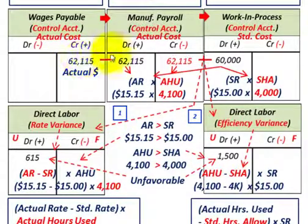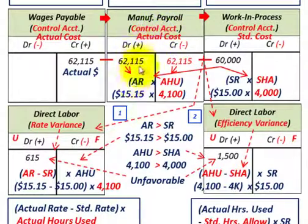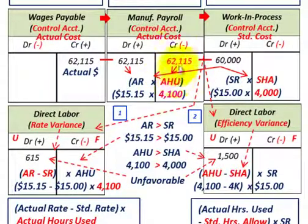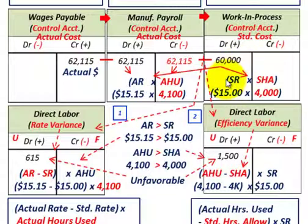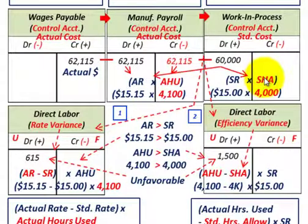Those wages payable are going to be transferred into a manufacturing control account at their actual cost — at a particular actual hourly rate and the actual hours used for the period or project. Then they're going to be transferred out of your manufacturing payroll account into the work in process account at a standard cost, meaning at a standard rate and based on the standard hours allocated for the particular project or department.